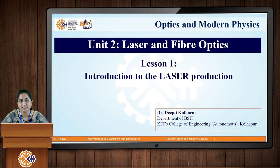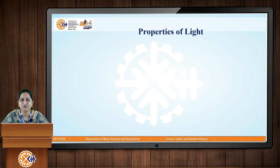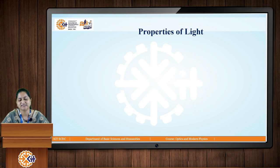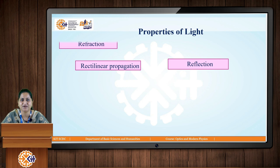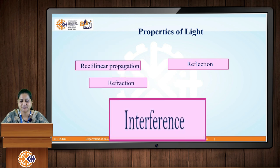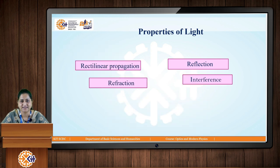We know that light is an electromagnetic wave and it shows certain fundamental properties like reflection, refraction, rectilinear propagation, interference, diffraction, polarization, dispersion, etc.